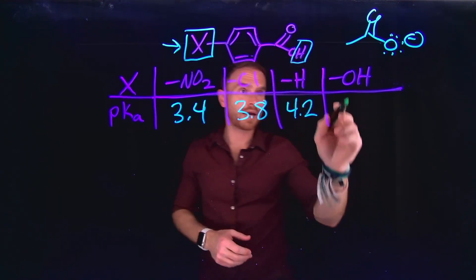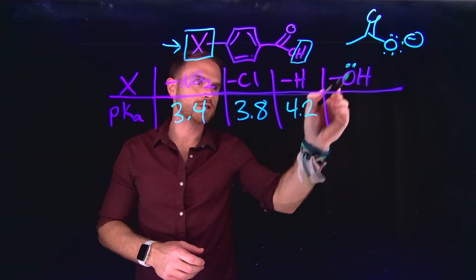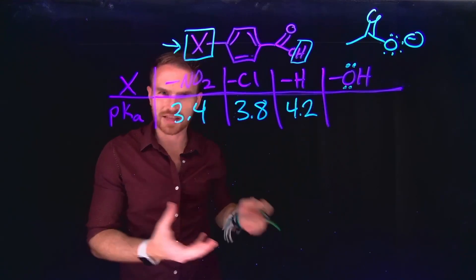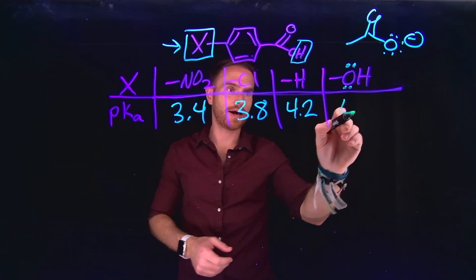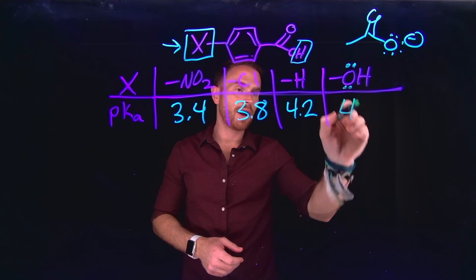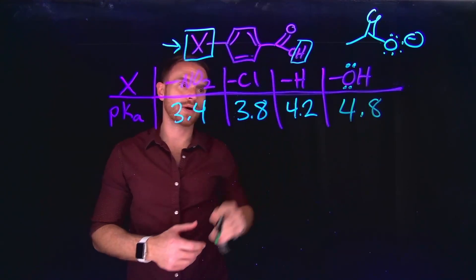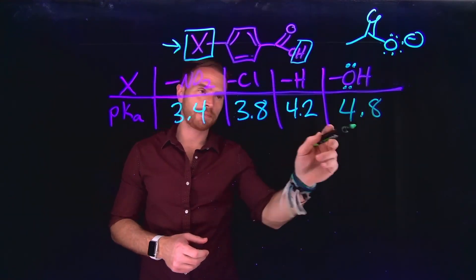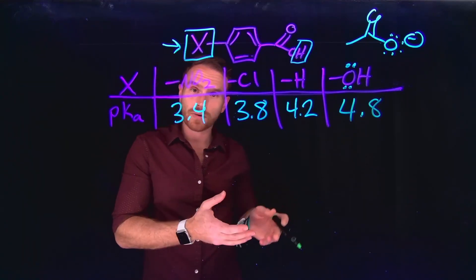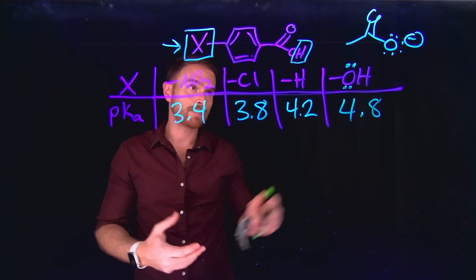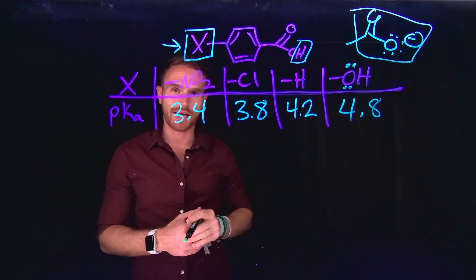Conversely, electron-donating groups like alcohols, which have a lone pair that can donate into the pi system, have even higher pKa values. The hydroxyl-substituted benzoic acid derivative has a pKa of around 4.8, because electron-donating groups decrease acidity by destabilizing the carboxylate formed after deprotonation.